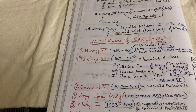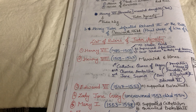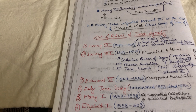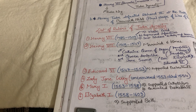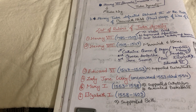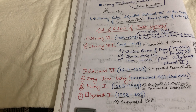Two groups existed: Catholics and Protestants. Edward the Sixth supported Protestants. After Edward the Sixth, Lady Jane Grey was briefly crowned, but she was quickly removed. Then Mary the First came to power. Mary the First supported Catholicism and executed Protestants. After Mary the First, Elizabeth the First came to the throne, and she supported both — she was kind of neutral toward Catholics as well as Protestants.